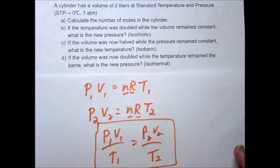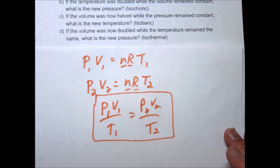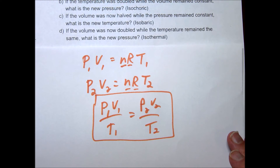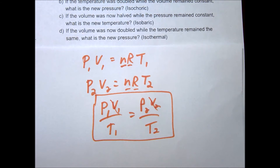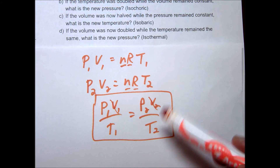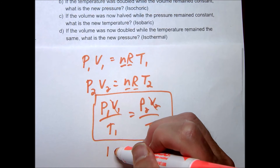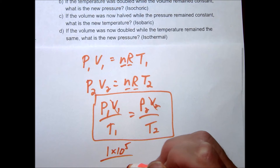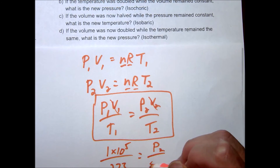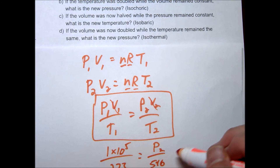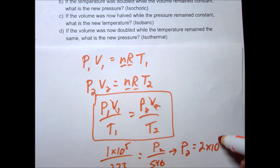When something is held constant it simplifies further. For example, in letter B with volume constant, the V terms cancel and you get P1/T1 = P2/T2. Using our numbers: 1 times 10 to the 5th divided by 273 equals P2 divided by 546, which gives a P2 of 2 times 10 to the 5th — confirming our earlier result.